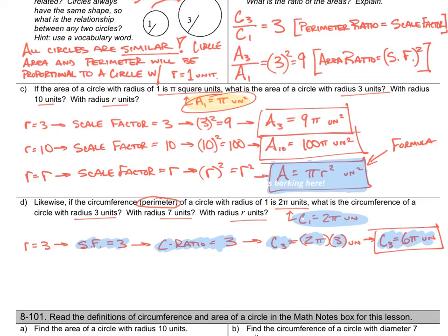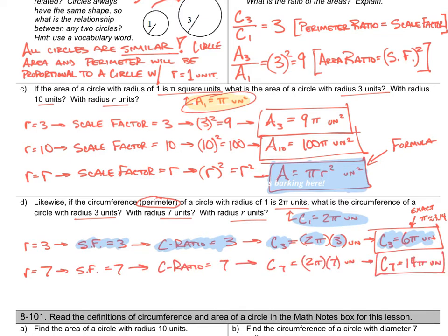Six pi units — that's what we call an exact value. If you substitute pi equals 3.14, it becomes approximate. If I leave the pi symbol in my answer, it's exact. For the circle with a radius of seven, the circumference is 14 pi units — that's an exact answer. We took the unit circle circumference of two pi and multiplied by the scale factor of seven to get 14 pi units.